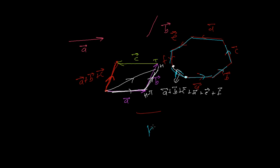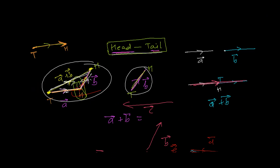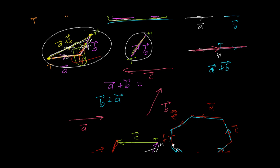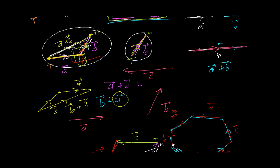For now, just understand head to tail — this is the key to adding vectors graphically. To add vector B plus A, first write vector B. This is vector B and this is the head of vector B. Now I'll add A by placing the tail of A at the head of B. So this is vector A placed here. This vector now represents vector B plus vector A — the head of the first vector connects to the tail of the second.